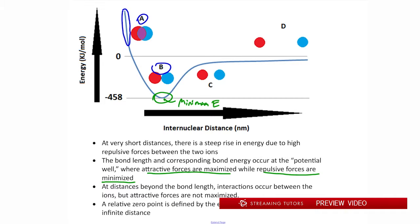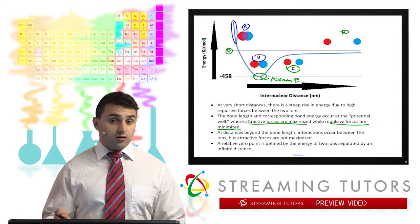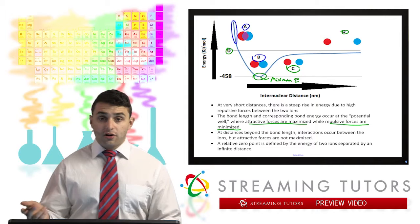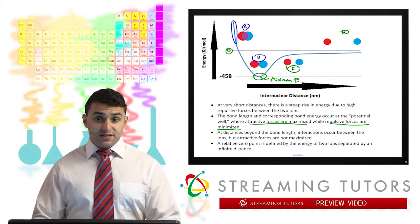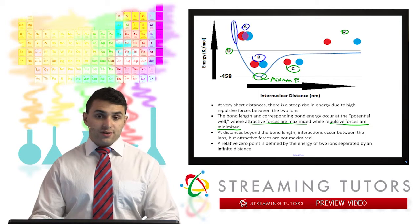Then as we go to C and D, as we go to C over here, we see that at distance beyond the bond length, the interactions occur between the ions, but the attractive forces aren't maximized because they're going to get too far away from each other. And eventually we get to point D. Our baseline energy, our zero point, because since our energies on this scale are all relative, our zero point comes when our two ions are at infinite distances away from one another, meaning that they would have no interaction between one another.